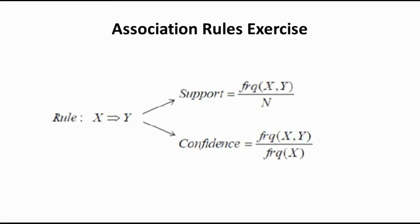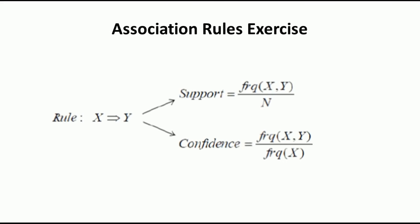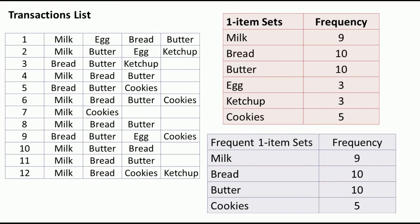We need to identify all rules which satisfy these two requirements: minimum support of 33 percent and minimum confidence of 50 percent. To proceed, we first identify the frequent itemsets, then write the association rules that satisfy those two requirements.